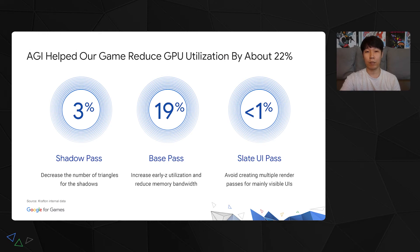The first improvement was the shadow pass, where we could reduce the number of shadow casters by about 3%. In the base pass, we could increase the value of early-Z usage and reduce memory bandwidth. The last one was the Slate UI pass.